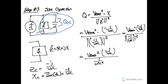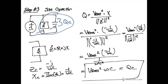Now we can start to fill in values to determine how big the capacitor needs to be. The RMS voltage is determined by the source, and the reactive power of the capacitor has already been determined.